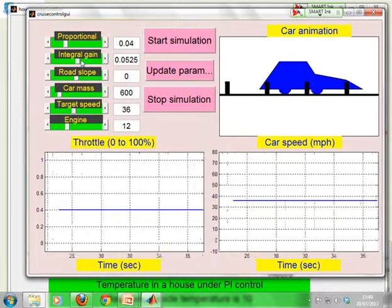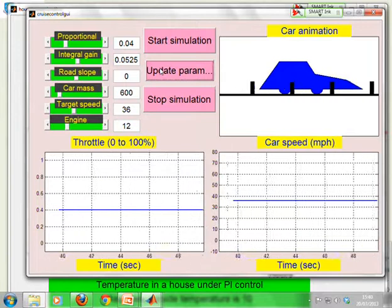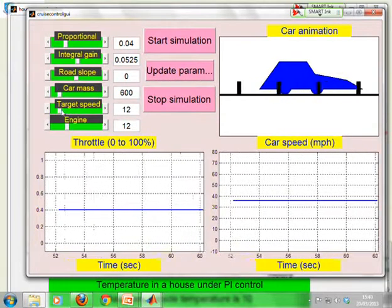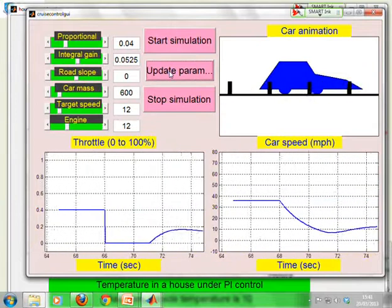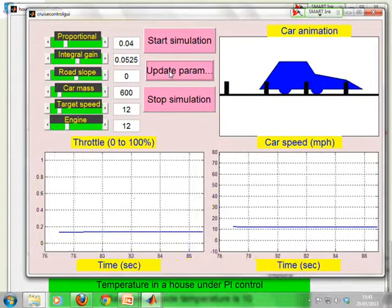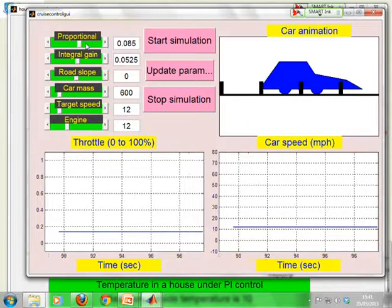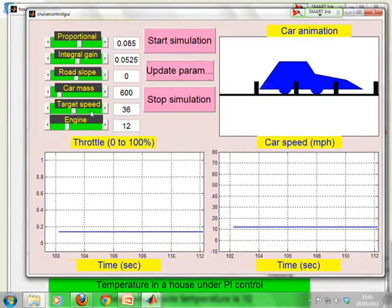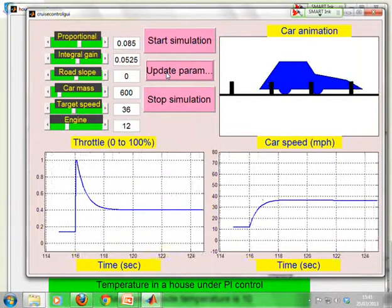Let's update parameters. Now nothing will happen at first. But when I change the target speed, now you'll see what happens. It's beginning to oscillate a bit because the integral was a bit too big. I could make the proportional much bigger. Update parameters. See what happens. And you'll see the throttle now is very aggressive. I don't know if you saw that. Perhaps if I pause it next time, I'll update parameters.